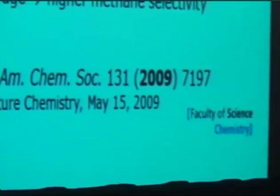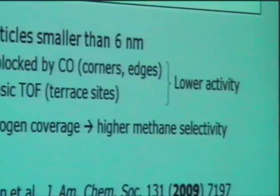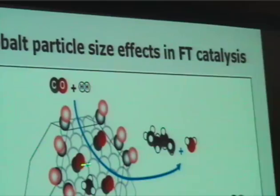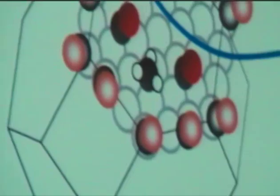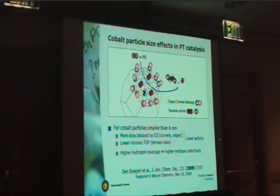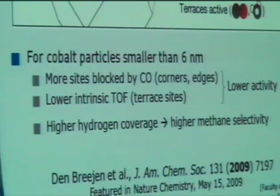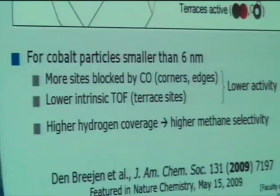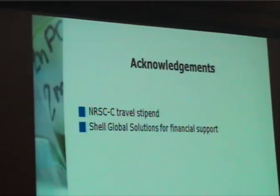In conclusion: for cobalt particle sizes smaller than 6 nanometers, more edge and corner sites are blocked by irreversibly adsorbed CO molecules. On the remaining active sites, there is also a lower intrinsic activity due to the increased residence time of CHX. Both effects result in lower activity. Additionally, increased hydrogen surface coverage explains the increased methane selectivity. This work has been published very recently. I would like to thank NRCC for the travel stipend, Shell Global Solutions for financial support, and you for your attention.